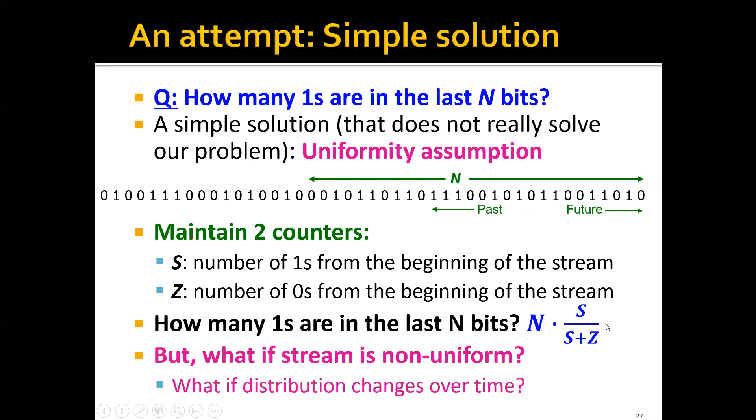But we have a problem here, because what if the stream is non-uniform? Basically, what if the distribution of the data changes over time? In this case, these two counters are definitely not accurate to estimate the number of 1s in the last N bits.